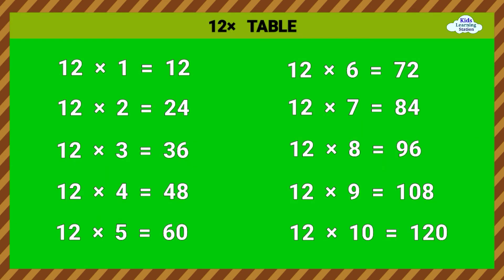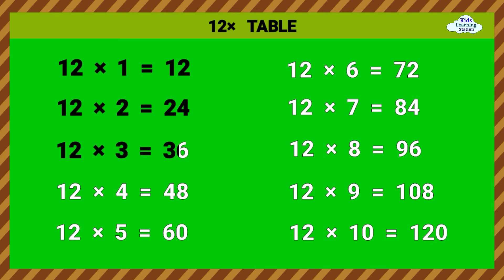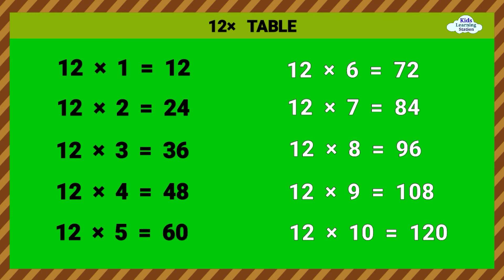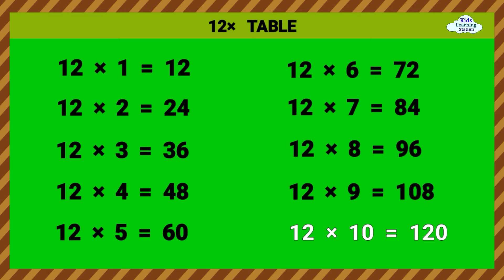Twelve Times Table. 12 times 1 equals 12. 12 times 2 equals 24. 12 times 3 equals 36. 12 times 4 equals 48. 12 times 5 equals 60. 12 times 6 equals 72. 12 times 7 equals 84. 12 times 8 equals 96. 12 times 9 equals 108. 12 times 10 equals 120.